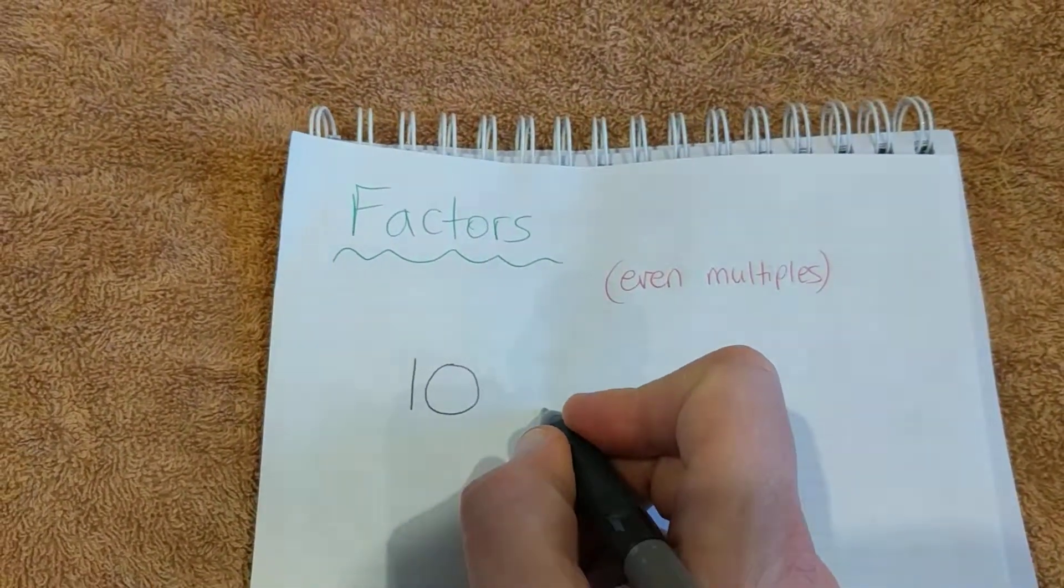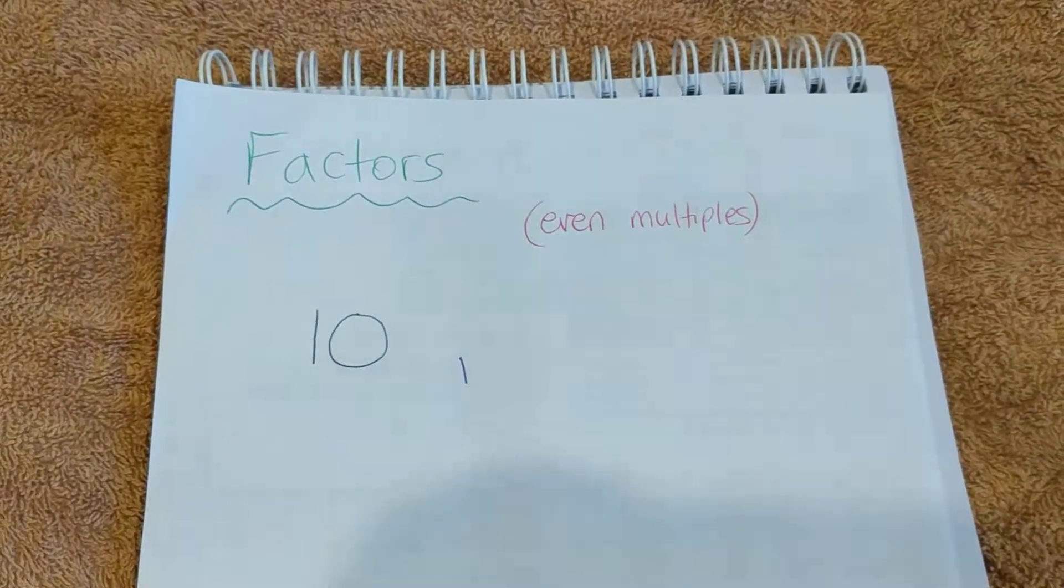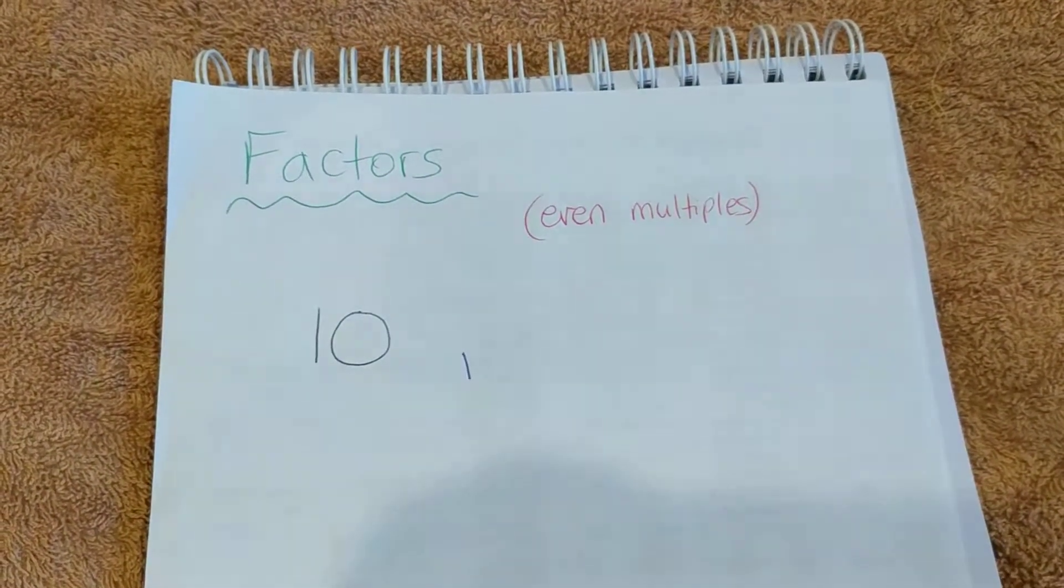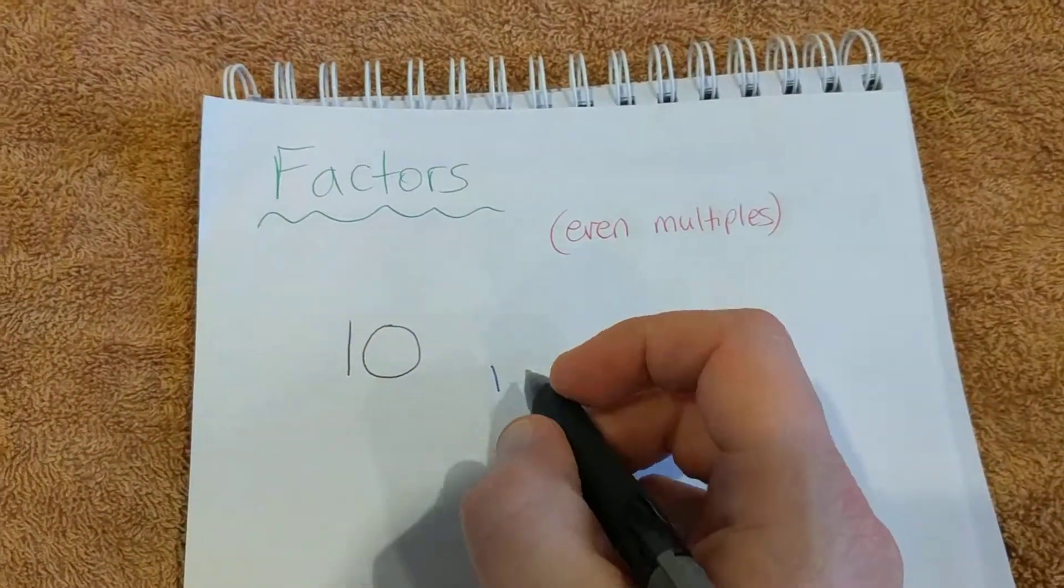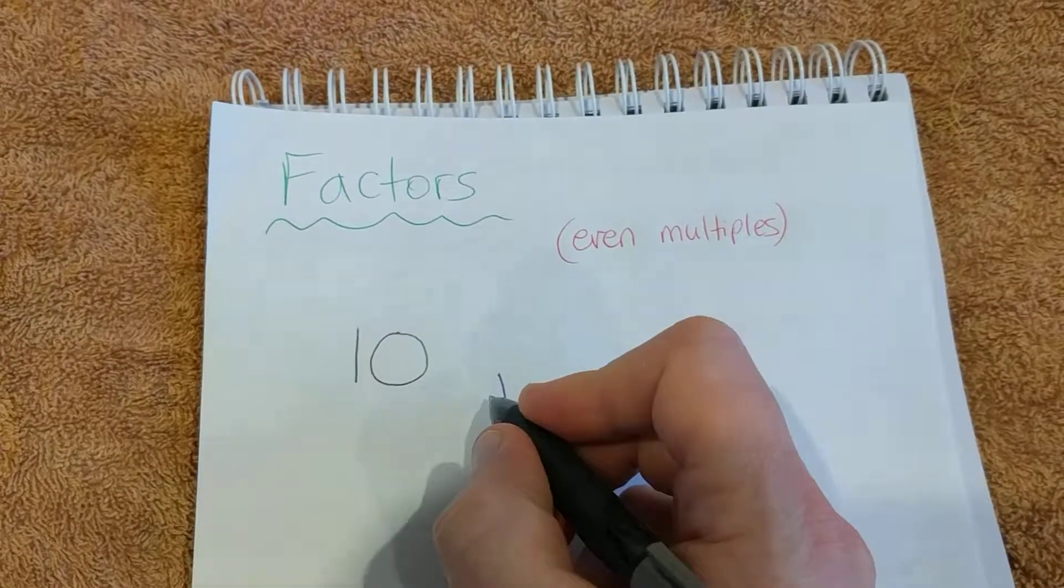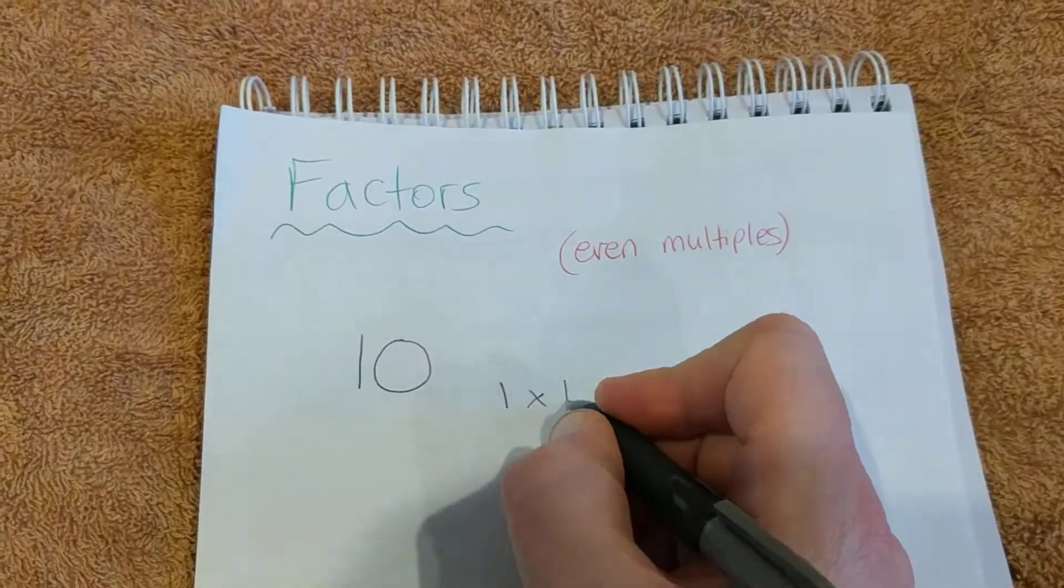The way we'd like you to write it out is to at least write all of the factors, but it can also help to show what you need to times that by - how many ones go into 10. So basically we're talking about times tables again.